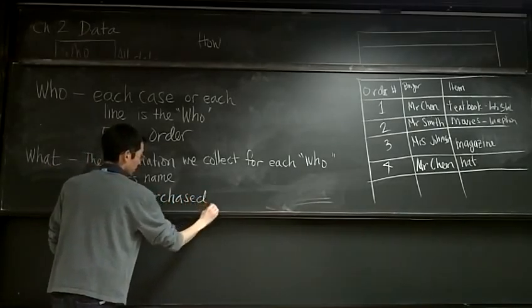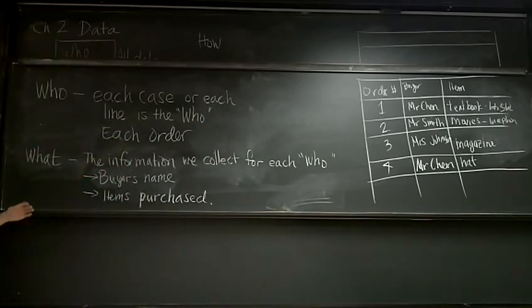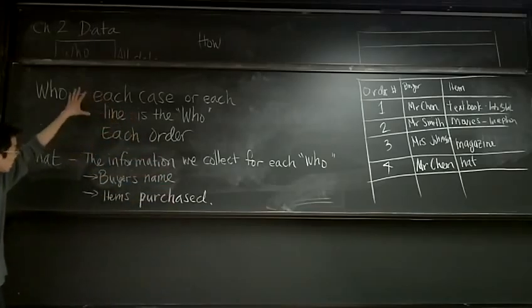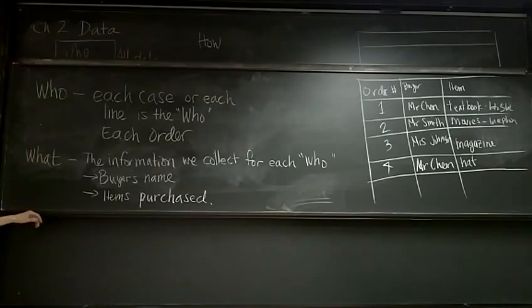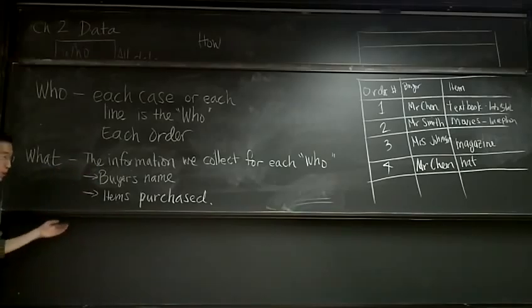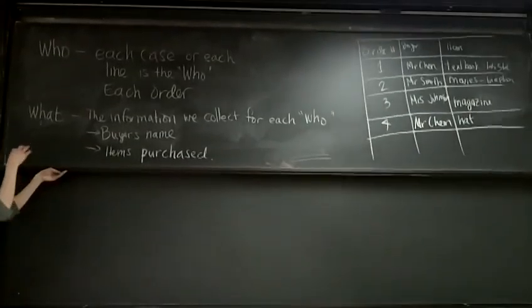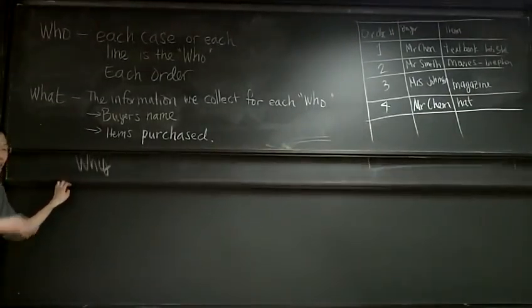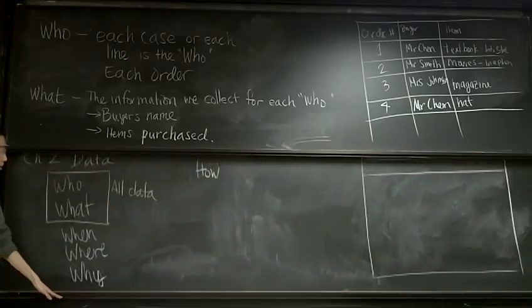Every data table or every collection of data will have these two basic elements: the who and the what. Don't allow yourself to be confused because 'who' generally means a person — in this context it's always each line in the table. You all know what when, where, why, and how mean, and the book covers what all of that is. A lot of times, those provide the context for the table.